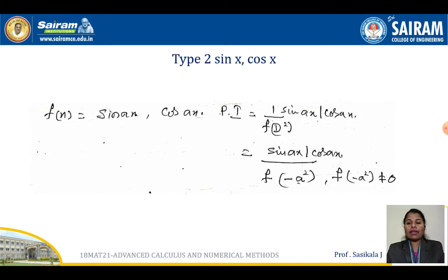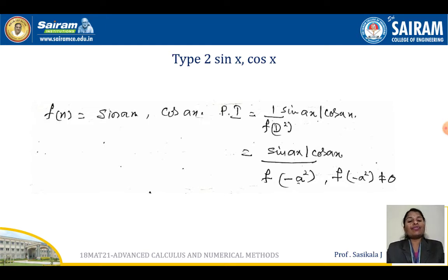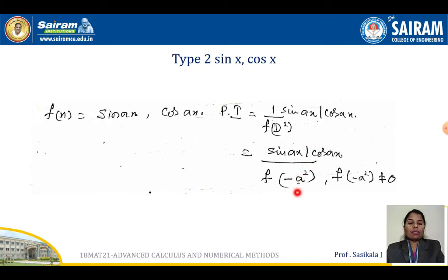So, when you have f of x either as sin ax or cos ax, your particular integral is equal to 1 over f(d²) of sin x or cos x. In the function of d, it may be d cubed, d squared, or only d — all are possible. What you are going to do: in the first step, you are supposed to replace the places of d squared only. The places of d squared are to be replaced by minus a squared. Note: it is minus a squared, not minus a the whole squared.